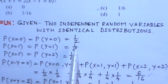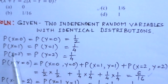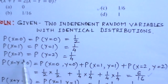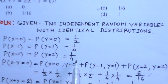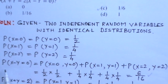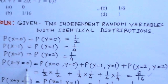We start the solution. The probability distributions are: P(X=0) = P(Y=0) = 1/2, P(X=1) = P(Y=1) = 1/4, and P(X=2) = P(Y=2) = 1/4. To find the conditional probability, we first compute the probability of the event X-Y=0.